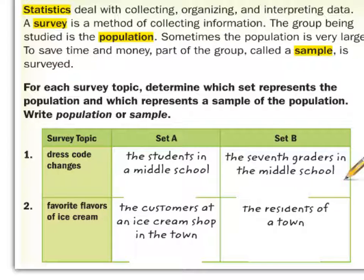The customers at an ice cream shop in a town — that's a very specific group, so that is definitely a sample. The residents of a town is a larger group, so that is definitely a population. Now, the size sometimes won't make a difference; it depends on how it's stated. The residents of a town would be a population if compared to the residents of a state or a country.